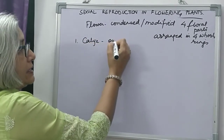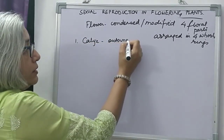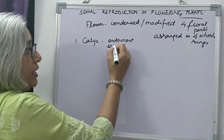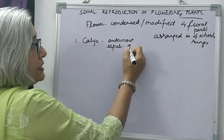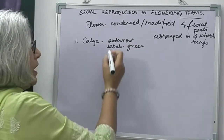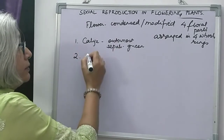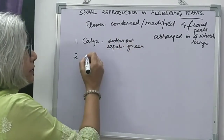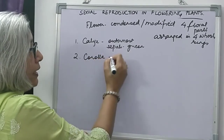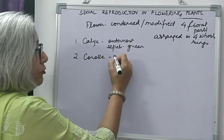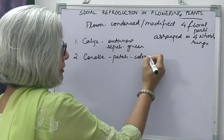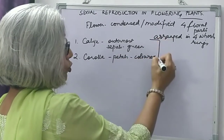Calyx is the outermost part. It is a collective term — it is made up of sepals, which are green in color. The second whorl is the corolla, which is made up of petals, which are generally colored.